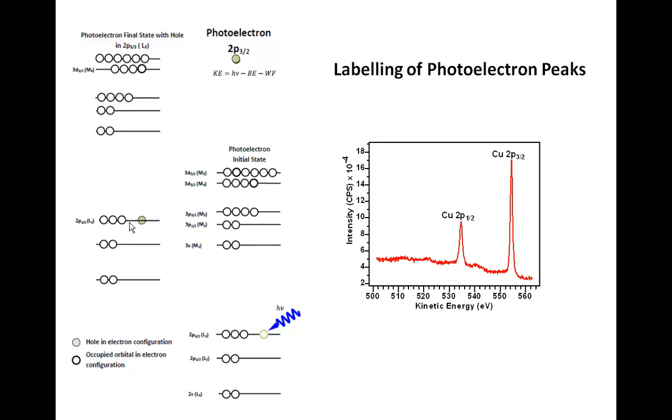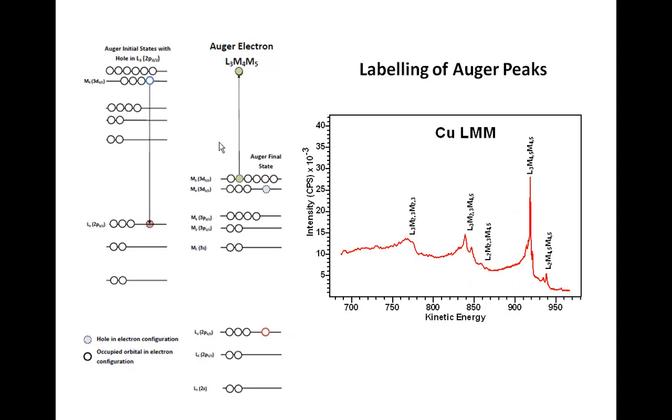We can identify this hole by a set of quantum numbers: the principal quantum number, the angular momentum quantum number, and the total angular momentum quantum number. We're not describing the electron itself by 2p3/2, we're describing the hole that has been created within the ion that has been raised in energy due to the absorption of the photon. So we label our photoemission peaks using holes, as opposed to the electron itself.